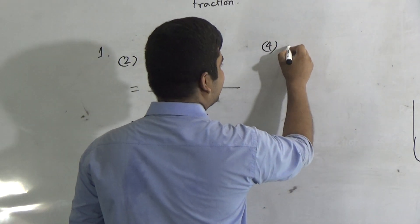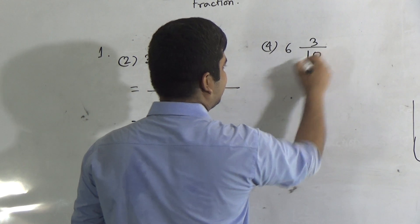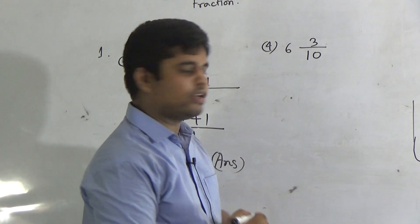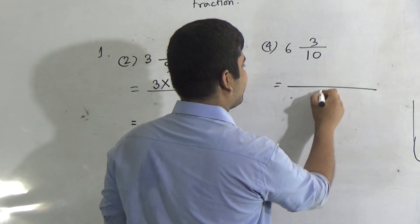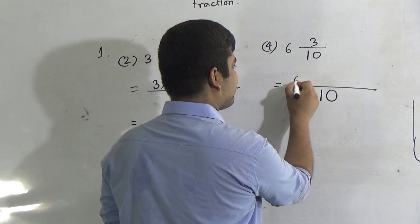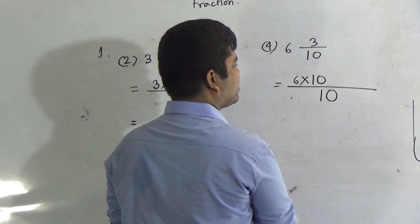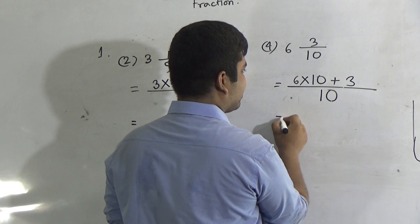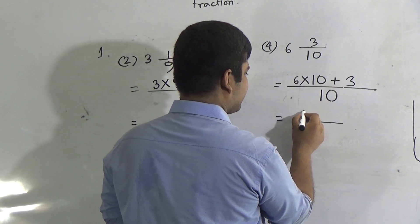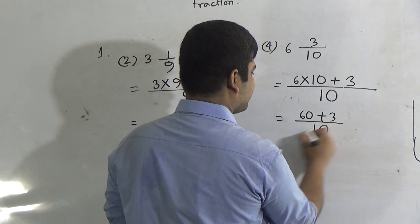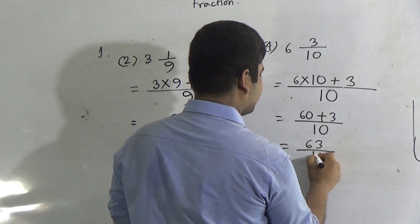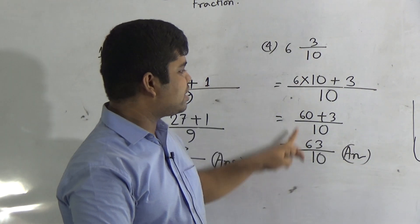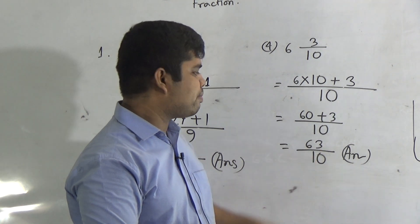Question number 4: 6 and 3 by 10. Here 10 is the denominator, 6 is the integer part, and 3 is the numerator. The denominator stays the same as 10. We multiply the integer part 6 by the denominator 10: 6 tens are 60, then add the numerator 3, giving 63. So the answer is 63 by 10. That means converting this mixed fraction into improper fraction gives us 63 by 10.